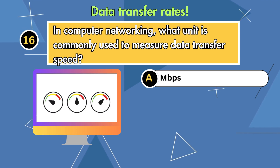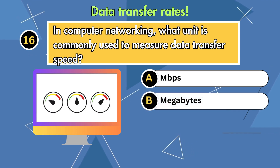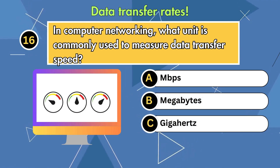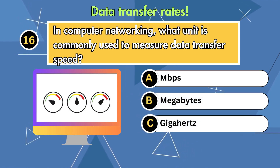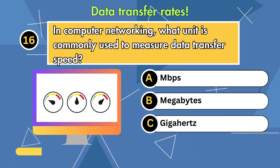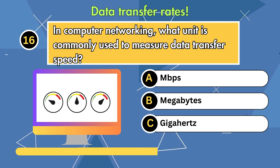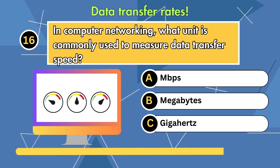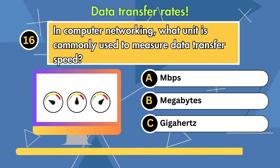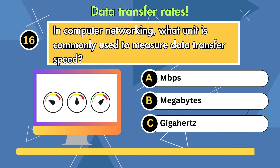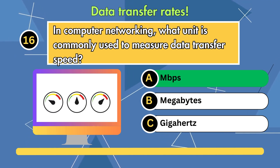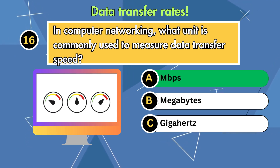Question 16. In computer networking, what unit is commonly used to measure data transfer speed? Option 1: Mbps. Option 2: Megabytes. Option 3: Gigahertz. Answer is Mbps.